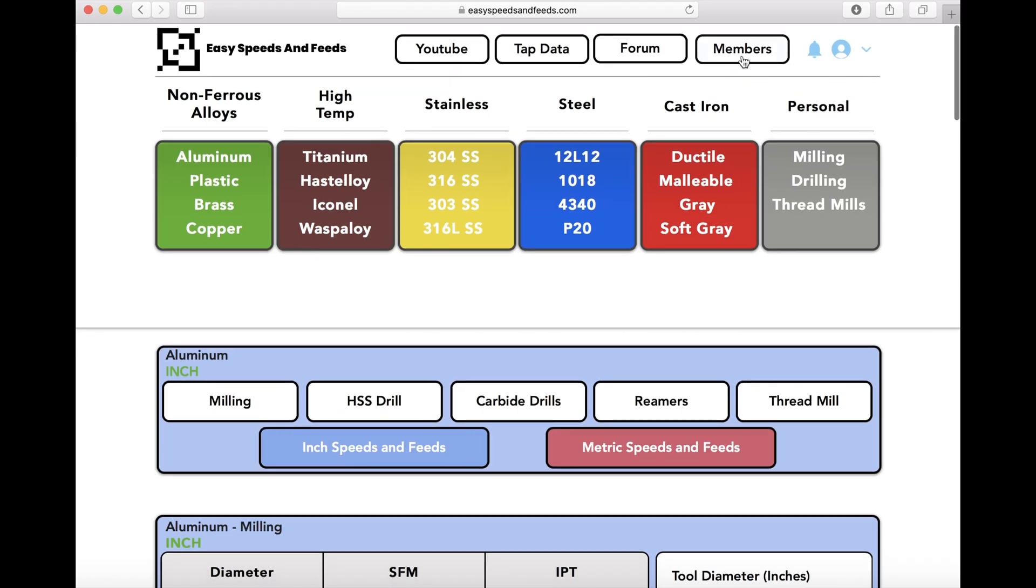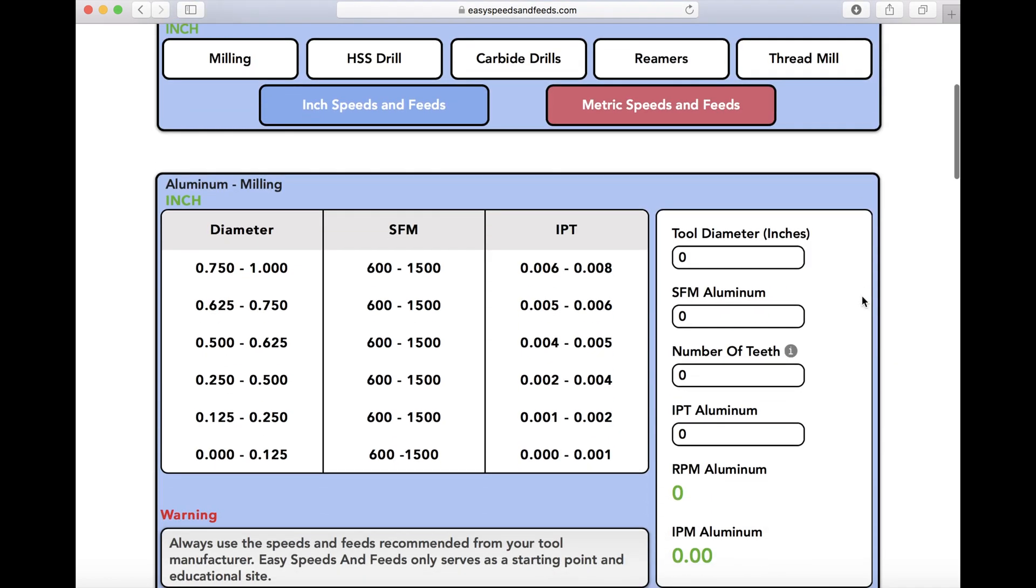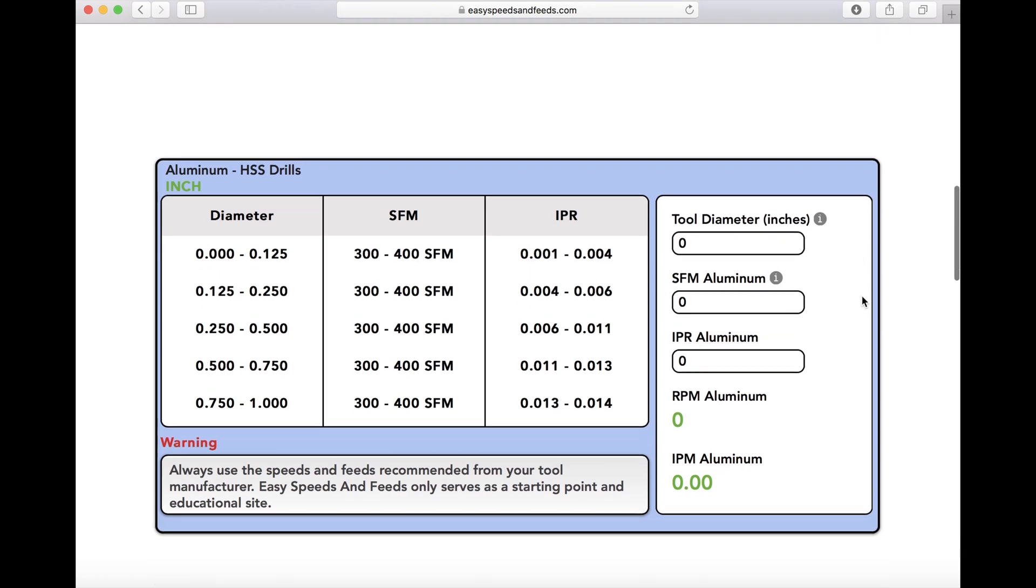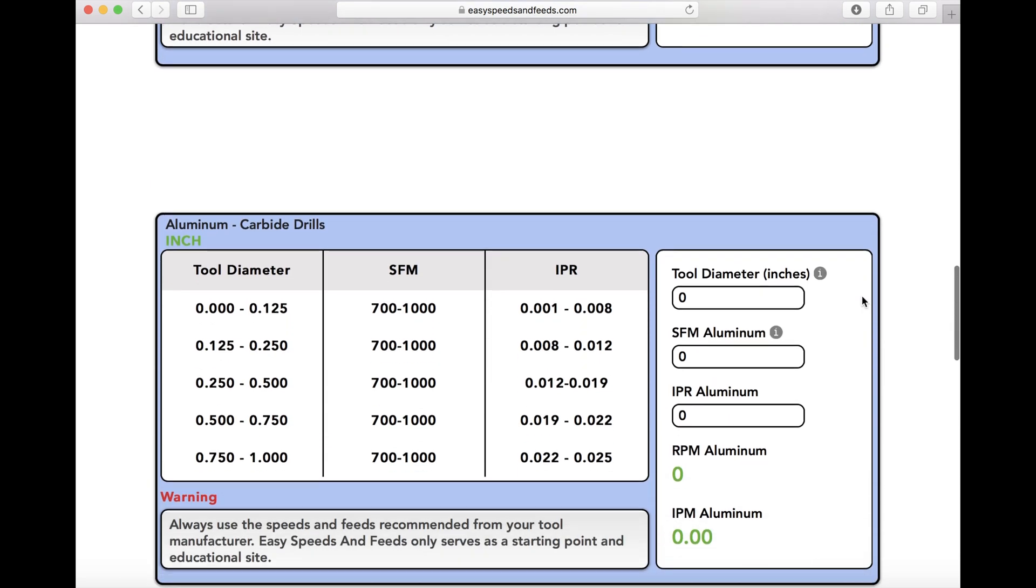Hey what's up everybody, this is Easy Speeds and Feeds and I'll show you how the website works. At the top we've got non-ferrous, high temp, stainless steel, cast iron, and personal categories. Personal goes to milling, drilling, and thread mills where you can add your own speeds and feeds into the website.